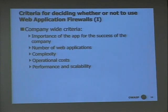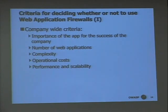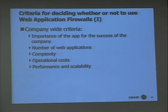The criteria for deciding whether or not to use the application is essentially company-wide criteria. It goes further down the idea earlier in the paper in prioritizing your applications — the importance of the application for the success of the company. If the application is offline and you can't do any customer business anymore, then you should use security somewhere — not just an application firewall or app testing tools or networking firewalls.